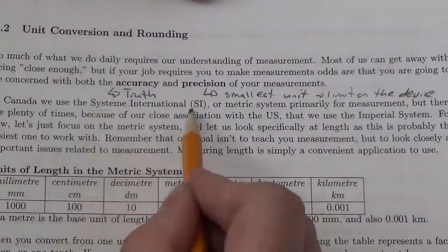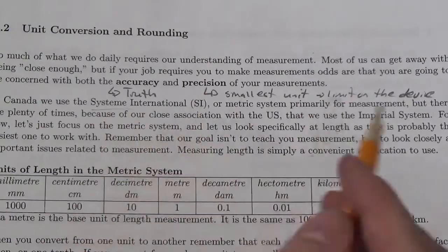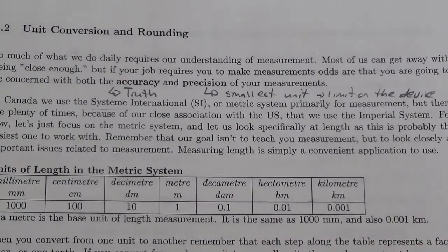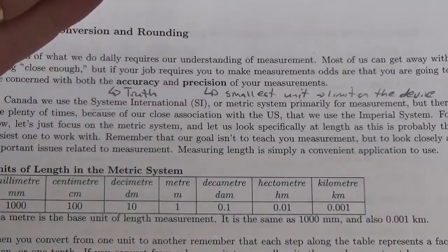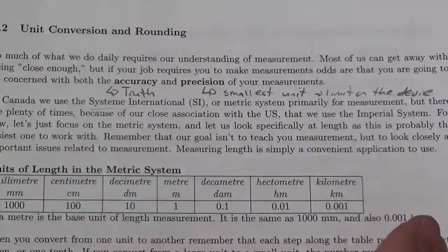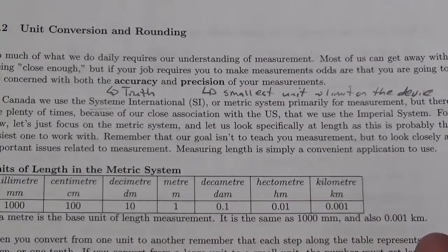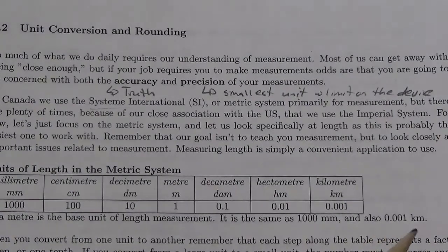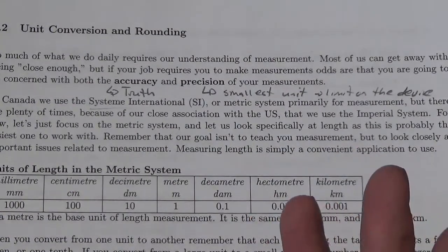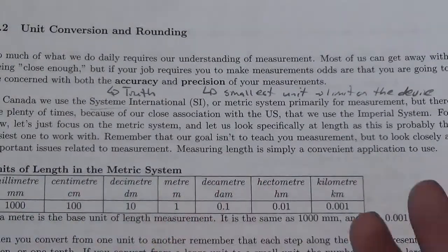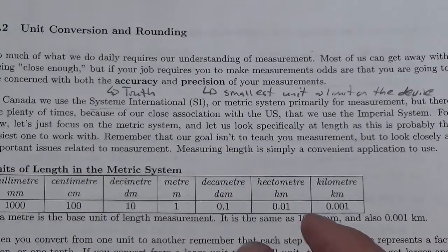In Canada, we use the metric system — what we call the SI system, or the Système Internationale. At least we use it for a lot. Canada's kind of caught between systems right now, because the United States uses the imperial system, and we frequently use the imperial system too. That's why a lot of us still, when we ask how tall are you, measure it in feet and inches, or how heavy are you in pounds, even though technically we should be measuring in meters, centimeters, and kilograms.